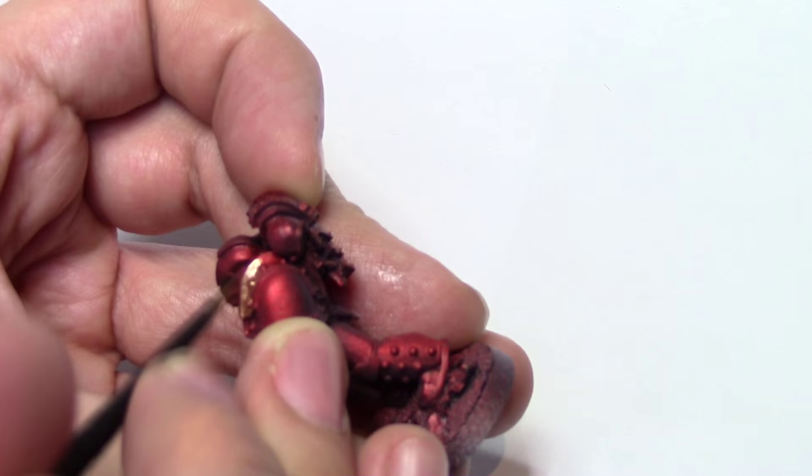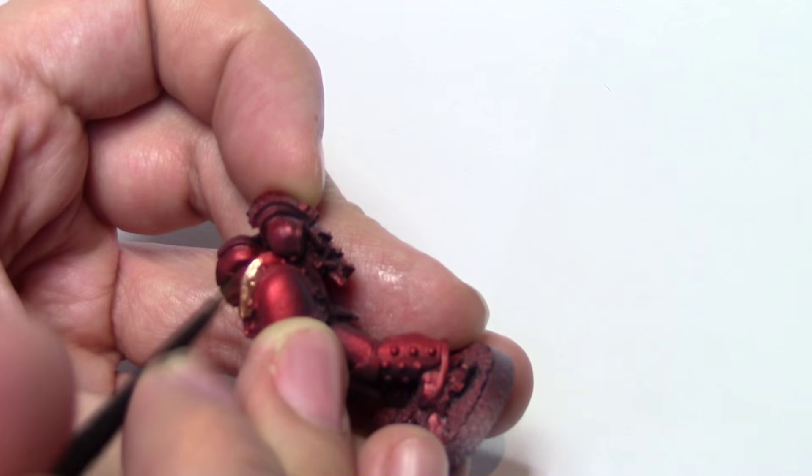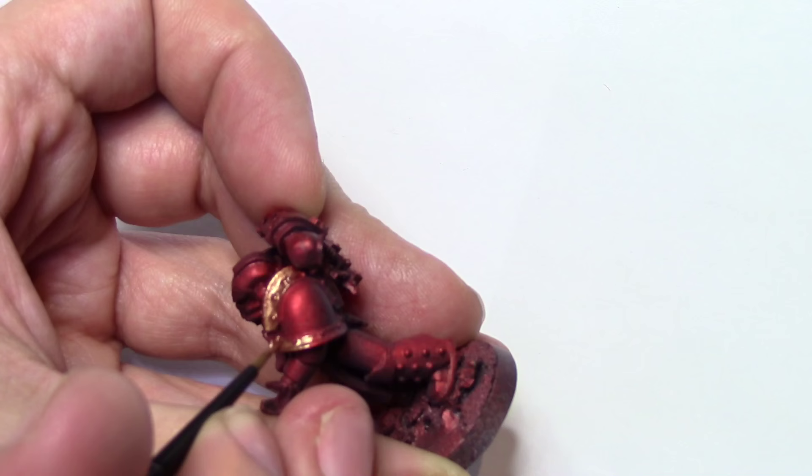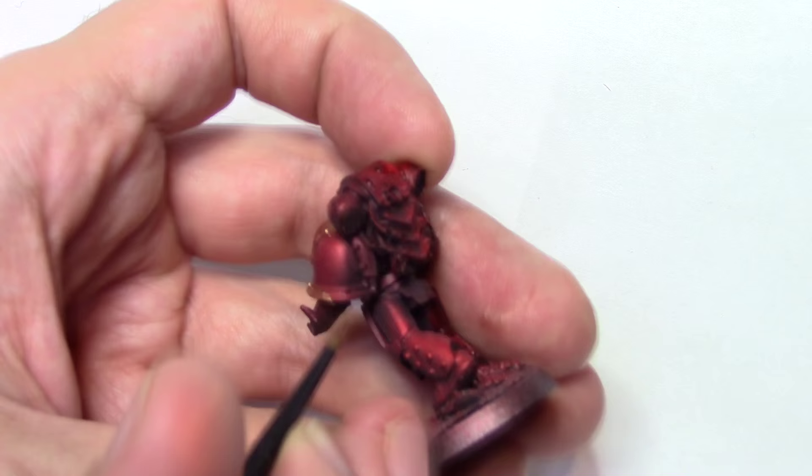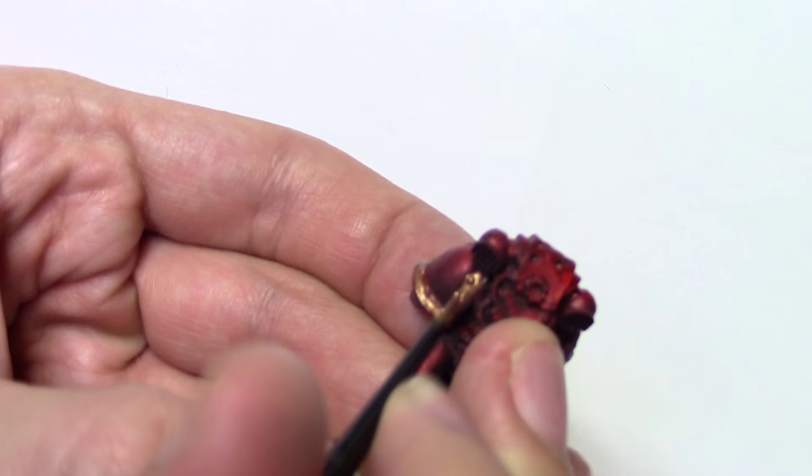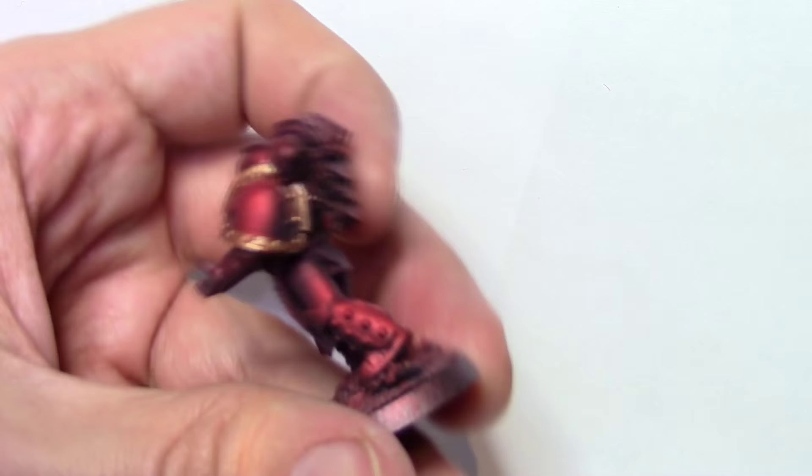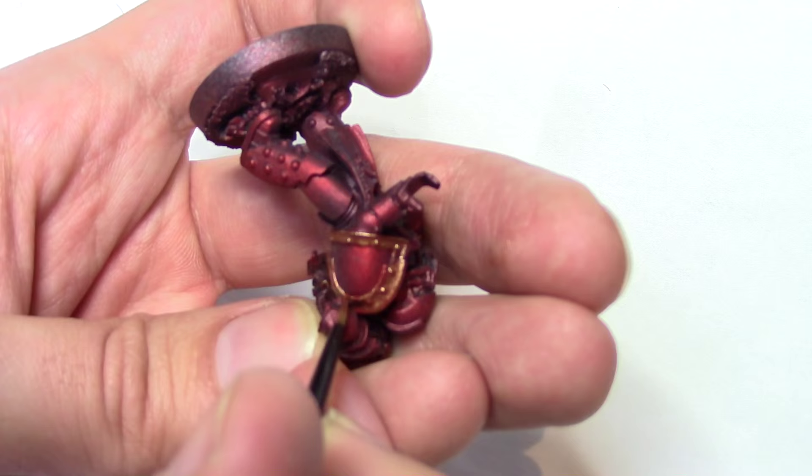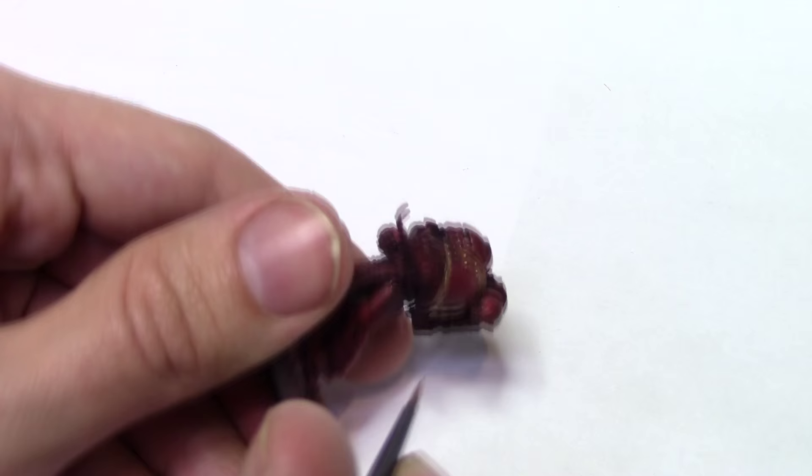So now we're going to do the golds here. This is Vallejo Brassy Bronze, I believe. I've missed it just a second ago, but yeah, this is basically just the base color for all the golds.